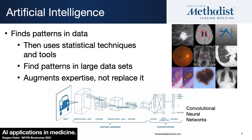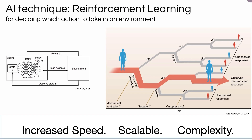The idea of a convolutional neural network is that data is inputted, statistical methods analyze it, and it creates certain hypotheses. Those hypotheses have been deployed in a variety of areas — finding strokes, finding aneurysms, finding pulmonary emboli — many of these as commercially available products. What the AI technique does is reinforce learning; it allows you to create different scenarios and identify which best fit the data. In terms of data analysis, it increases speed, it's scalable, highly complex, and allows us to deal with more complexity than the average human can.